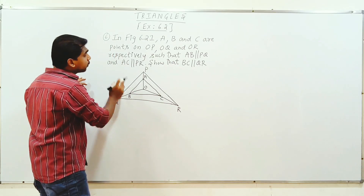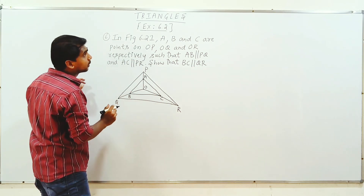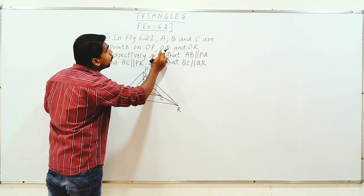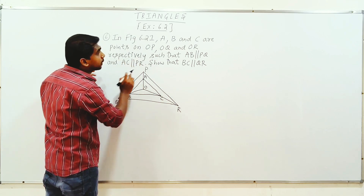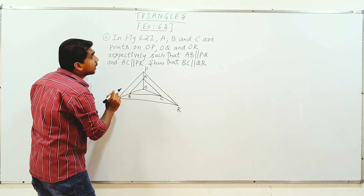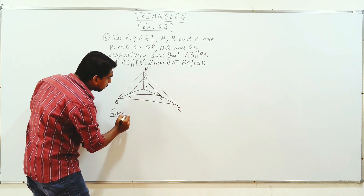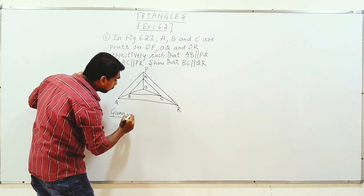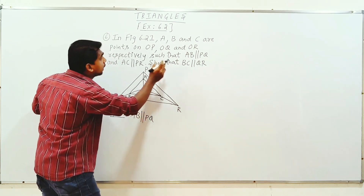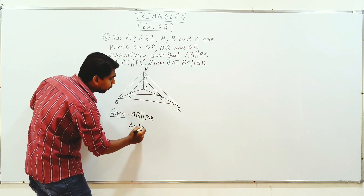Sixth question: in figure 6.21, A and B are points on OP, and C is a point on OR respectively, such that AB is parallel to PQ and AC is parallel to PR.